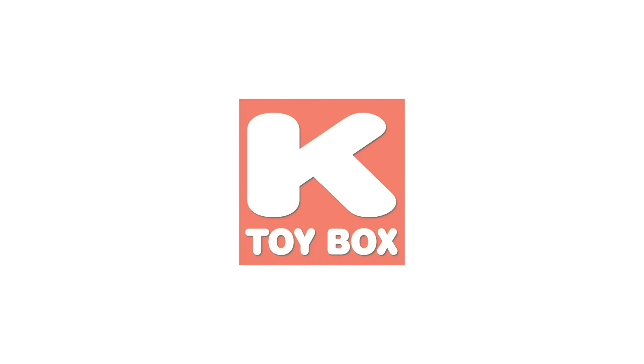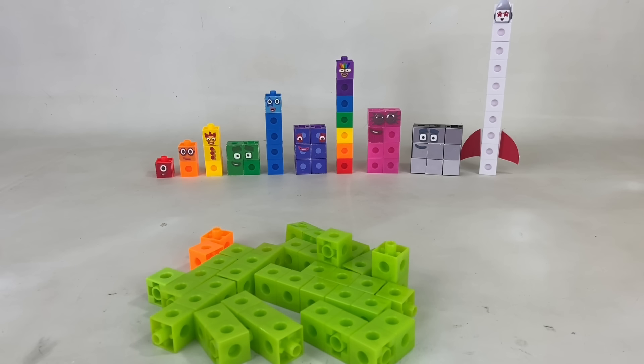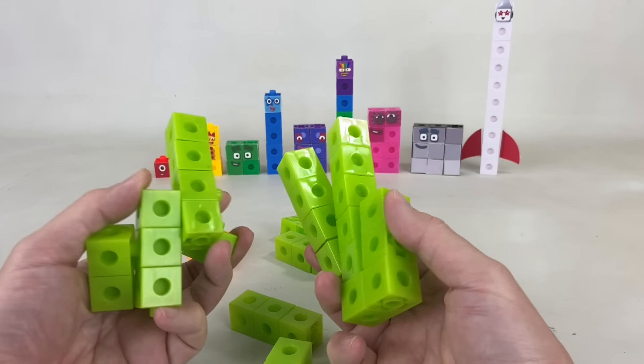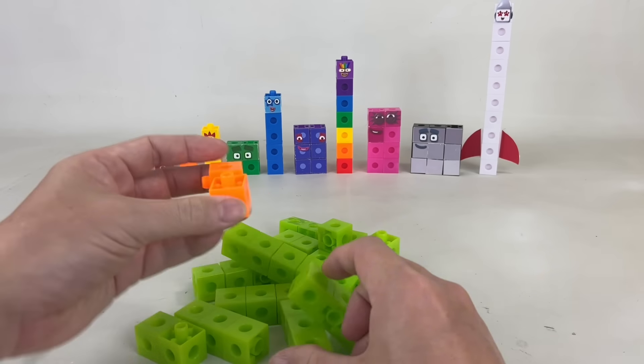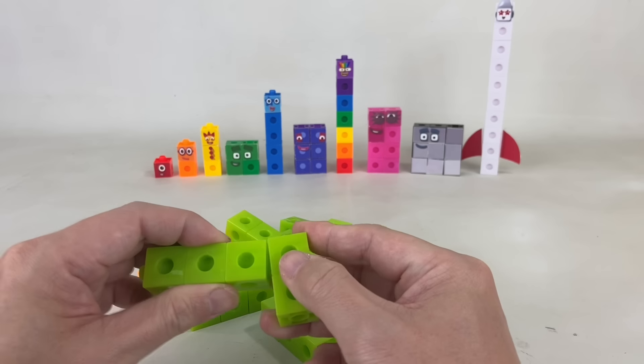First, let's build Number Block 42. 42 is made up of 40 light green blocks and 2 orange blocks.